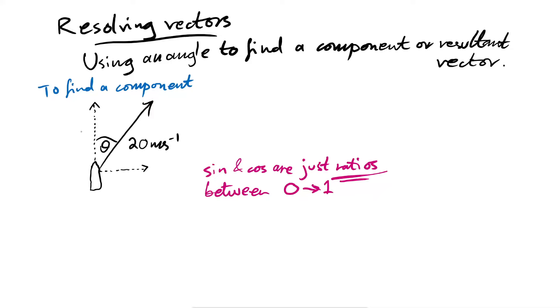So look at this. To find my component, I'm going to call that V. I can say that V is equal to 20, but I know it's going to be smaller than 20. So therefore I'm going to times by, well, either sine or cos of this angle theta. Let's say that that's something like 30 degrees.